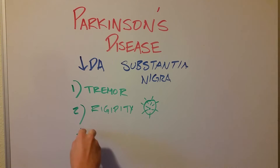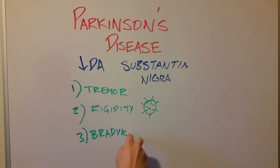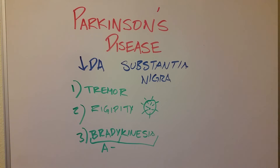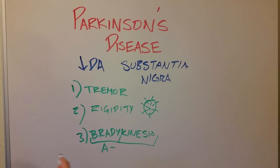The third is bradykinesia or akinesia, depending on who you ask. Breaking the word down: brady means slow, or if it's 'a,' that means lack of, and kinesia is movement. So these people are slow to initiate movement. If you asked a person with advanced Parkinson's disease to stand up from their chair, it would take them much longer than someone without Parkinson's. They are slow to move, and it's hard for them to mentally recruit their muscle groups.